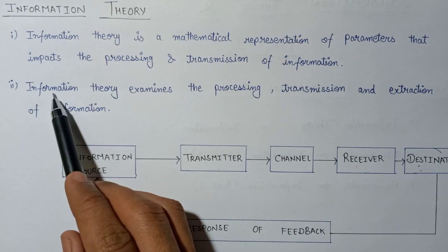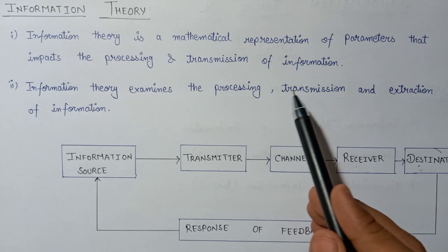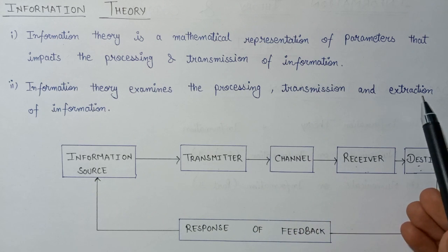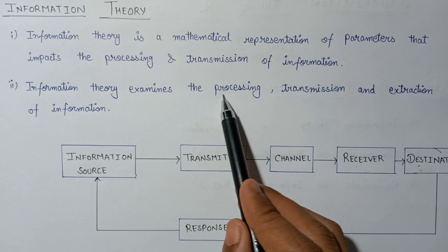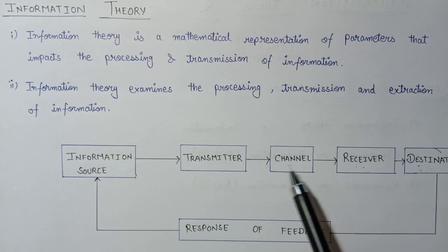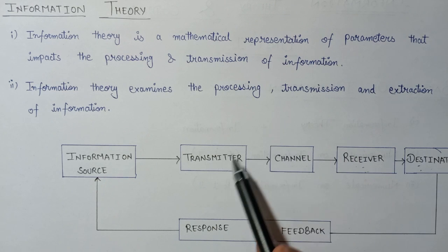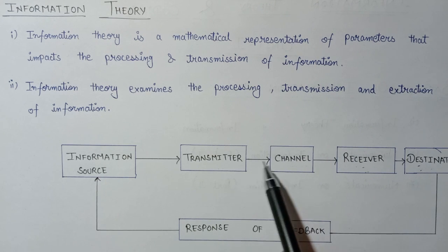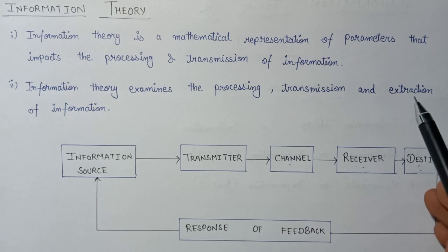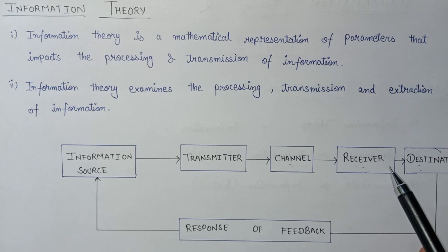Information theory examines the processing, transmission, as well as the extraction of information. Processing occurs because the transmitter and receiver process the information before transmitting and receiving it through the channel. Transmission refers to the sending of information by the transmitter towards the channel, and extraction refers to the destination extracting the information it receives from the receiver.